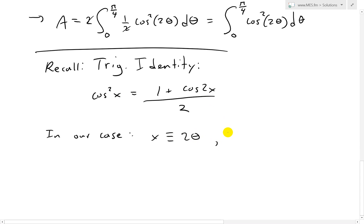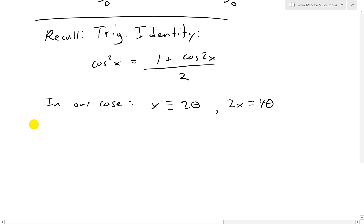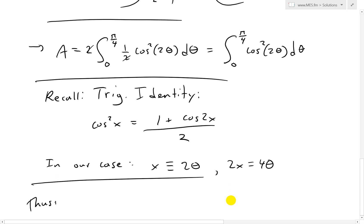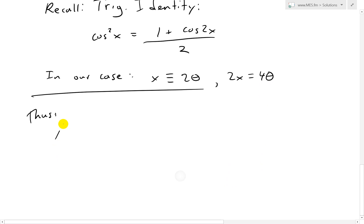In our case, this x right here is just equivalent to 2 theta. And the 2x would be just 2 times x, or 2 times 2 theta, which equals 4 theta. So thus we have, thus we could plug that in.